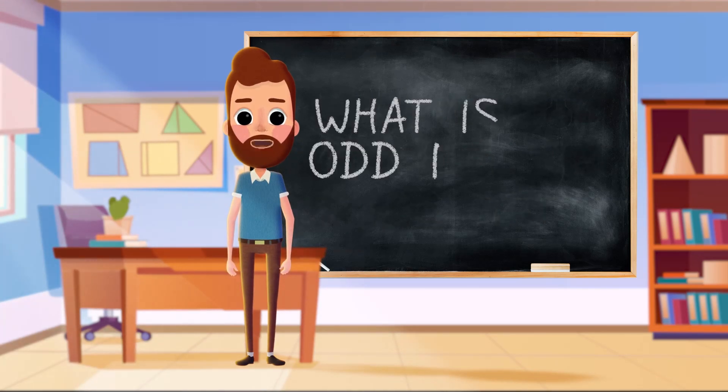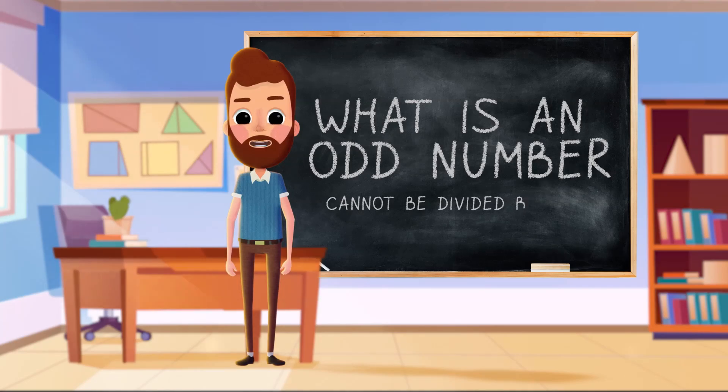So what is an odd number? An odd number is a number that cannot be divided exactly by two.